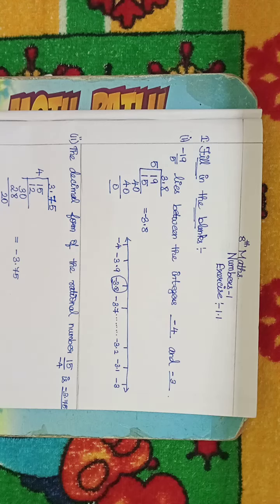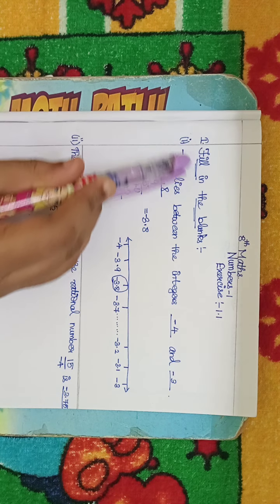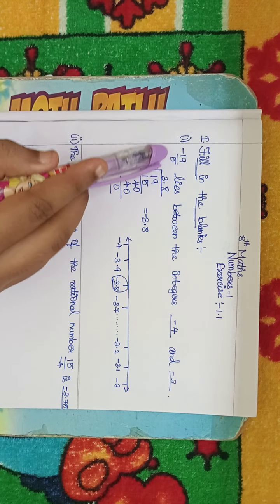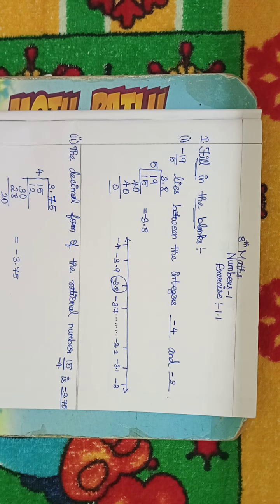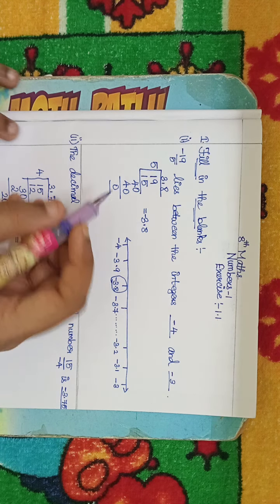Hello everyone! We are going to fill in the blanks. This is the first one: minus 19 by 5 lies between the integers dash and dash. We are going to fill the blanks.